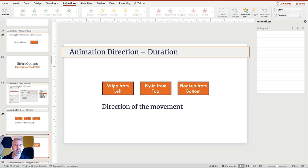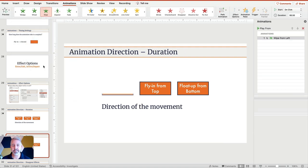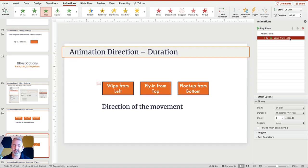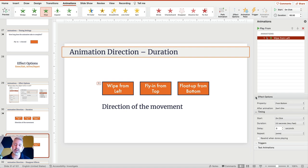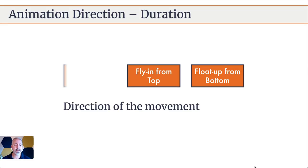Let's take a look at how we do that. Now we're in animations. I'm going to select this and then do wipe. That puts it here on the left, it's happening on click, and then we have effect options on the right. I'm going to change this to from left. So when we look at it, it wipes from left.